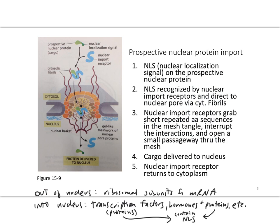Let's look in detail at how proteins are brought into the nucleus. What goes out of the nucleus includes ribosomal subunits as well as messenger RNA — both are produced within the nucleus. Messenger RNA is the product of transcription occurring at the chromosomes. What comes into the nucleus includes transcription factors, which are proteins synthesized in the cytoplasm by ribosomes that act to affect transcription, either increasing or decreasing transcription rates. We've talked about a couple of transcription factors this year, including MYC and E2F.